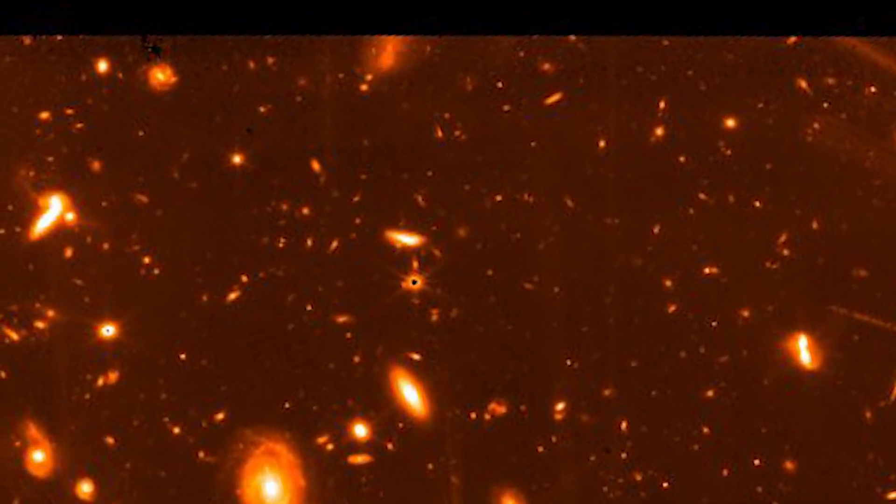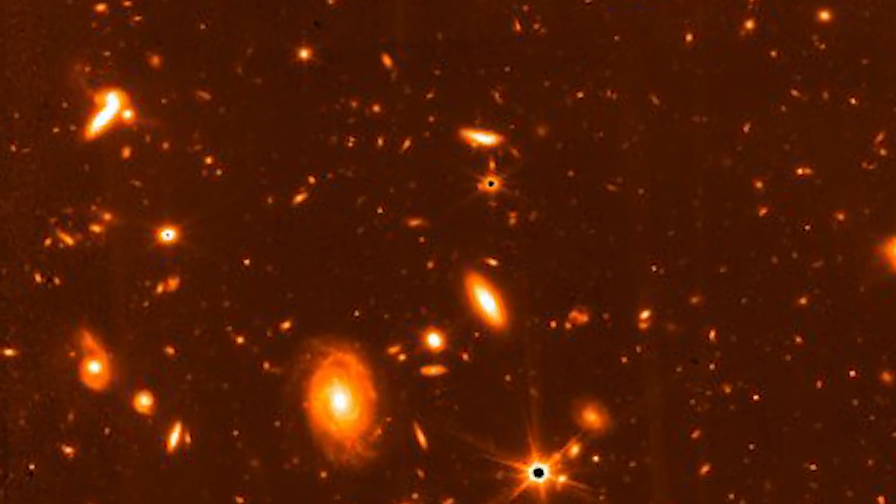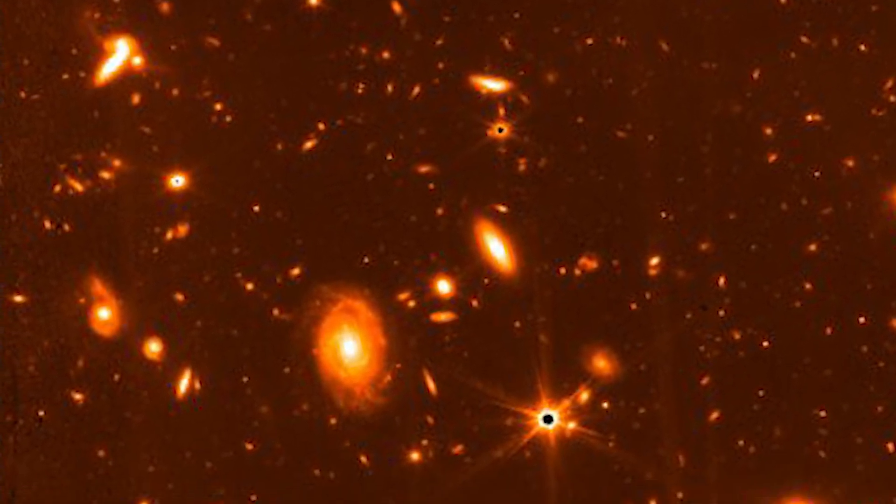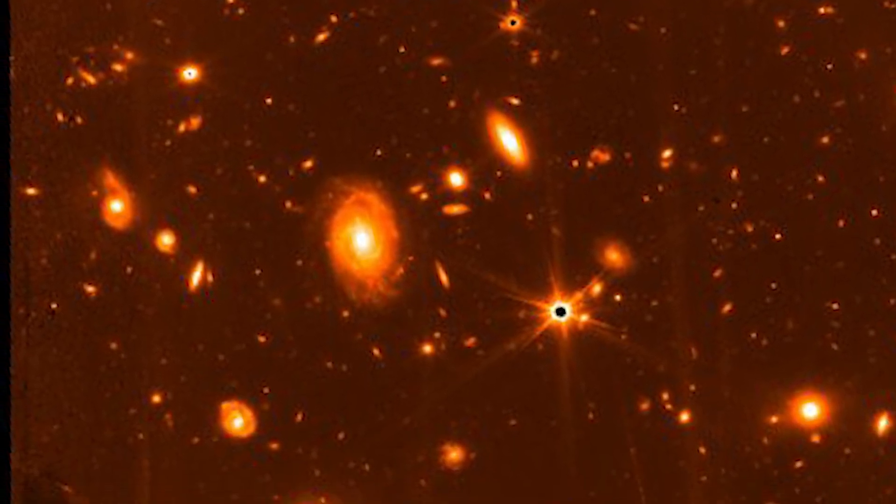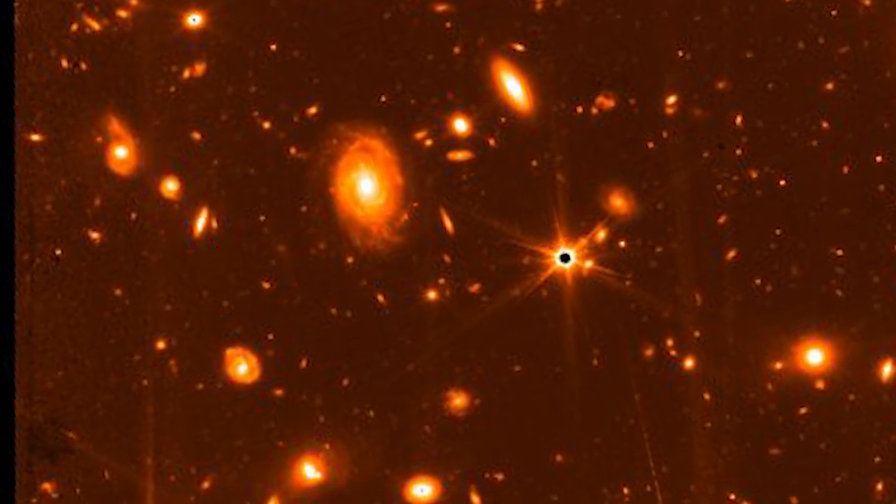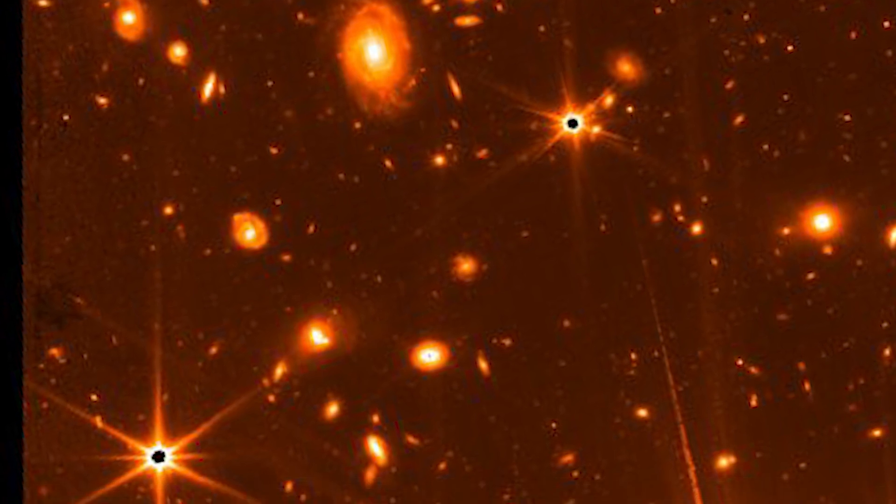Although it does give some indication of the telescope's power, it exhibits certain characteristics of the viewpoints Webb has developed throughout its post-launch planning. Due to Webb's six-sided mirror segments, bright stars stand out with their six long, highly defined diffraction spikes. Beyond the stars, the backdrop is almost entirely made up of galaxies.